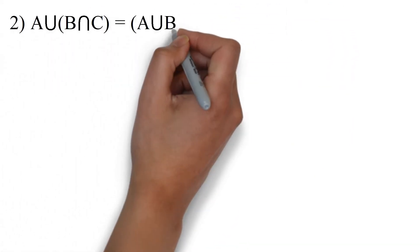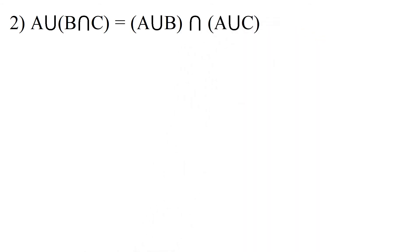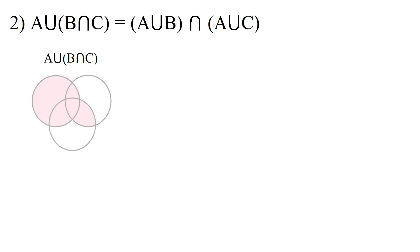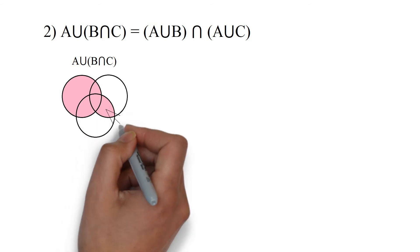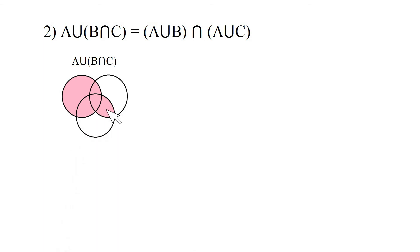Now the second distributive law states A union (B intersection C) equals (A union B) intersection (A union C). This shows A union (B intersection C), and this portion is B intersection C.